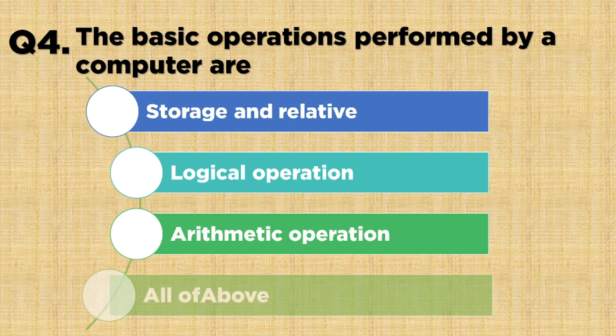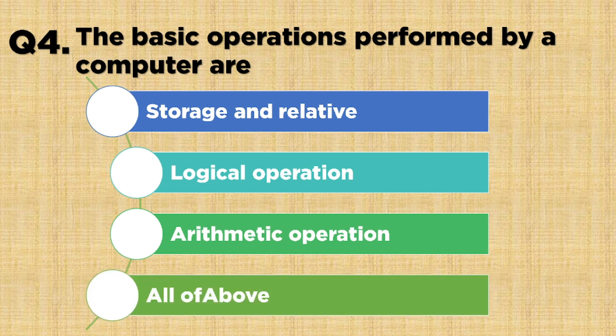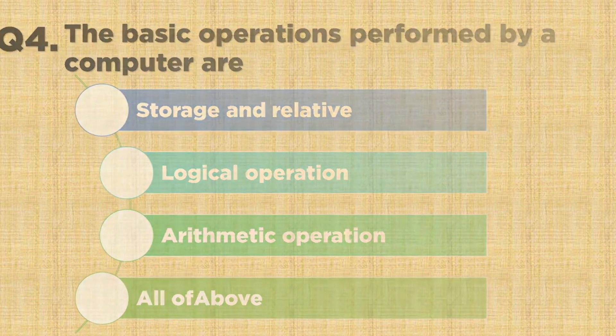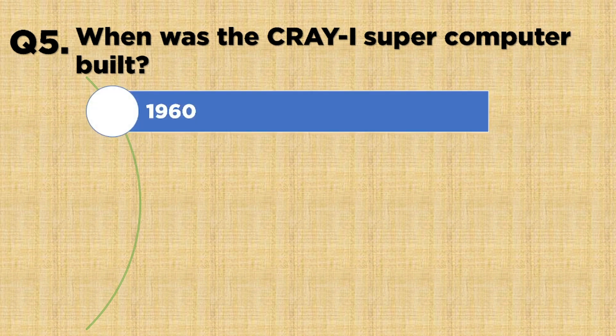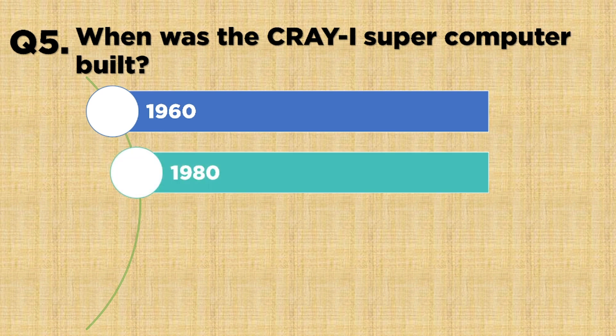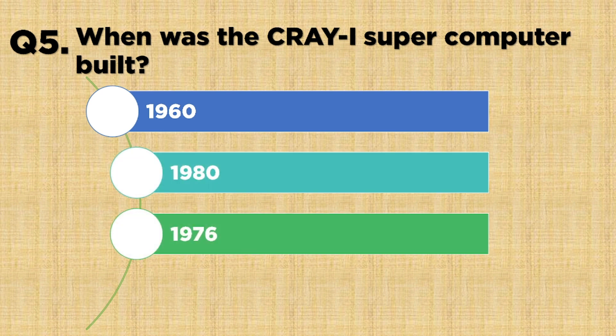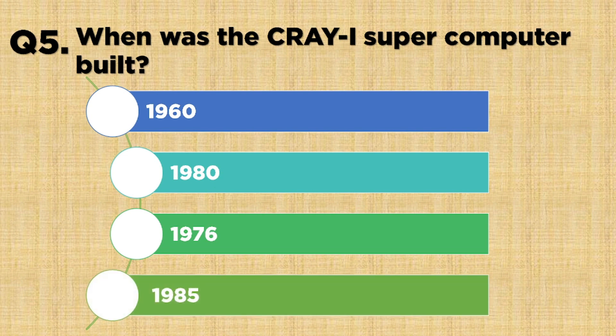Question number 5: When was the QI supercomputer built? Option A: 1960, Option B: 1980, Option C: 1976, Option D: 1985.